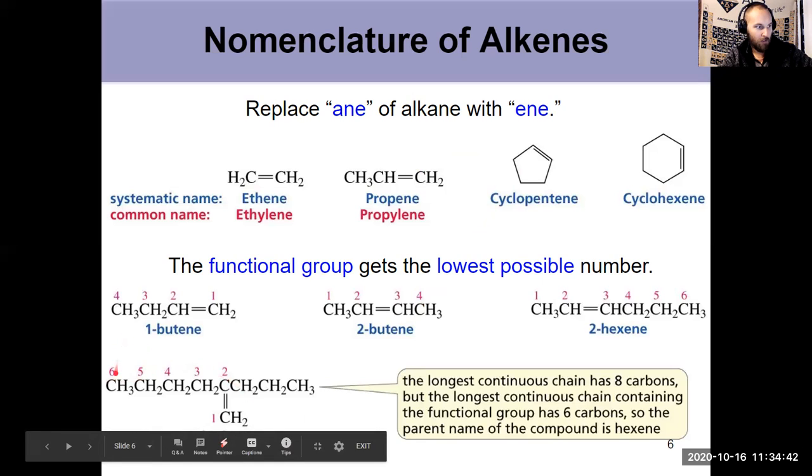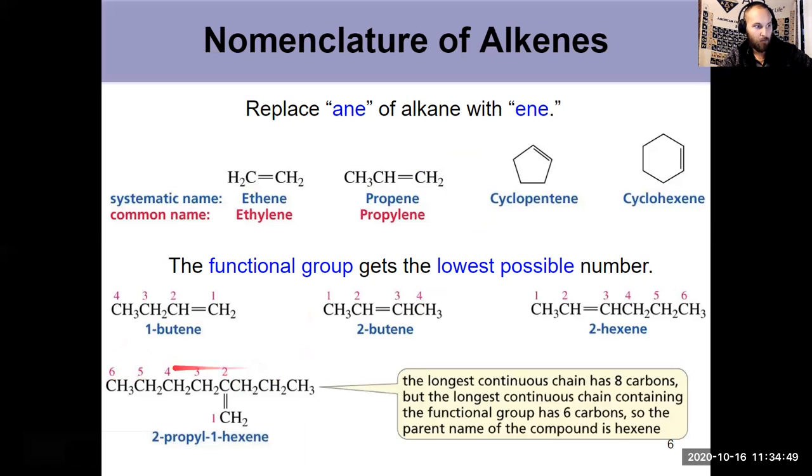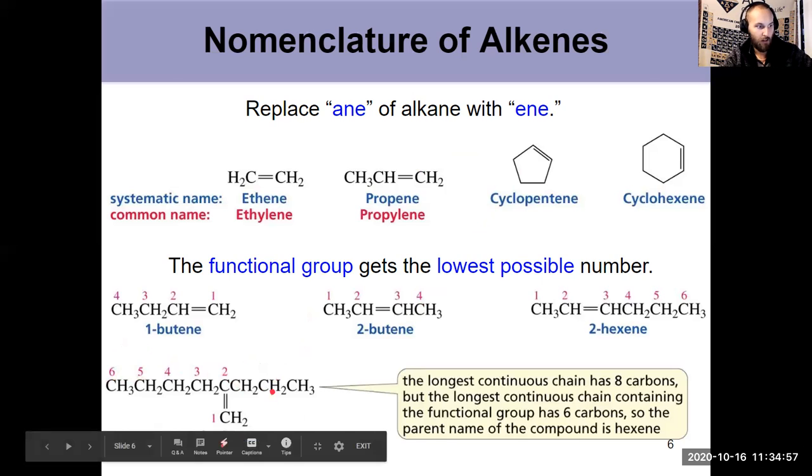So looking at this molecule at the bottom, I could have gone one, two, three, four, five, six, seven, eight, and named that as octane. But that carbon chain up top doesn't contain the functional group, which is why it's named as hexene. What's the number where the double bond starts? Carbon one in this case. So one hexene or hex one ene, either one is acceptable.